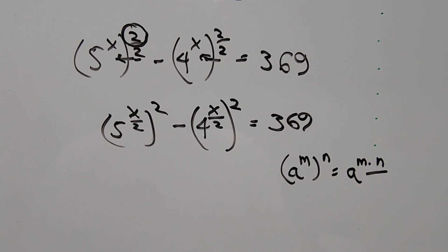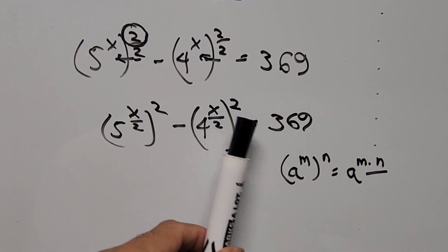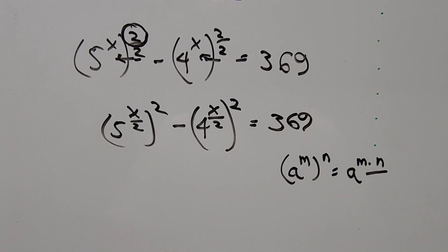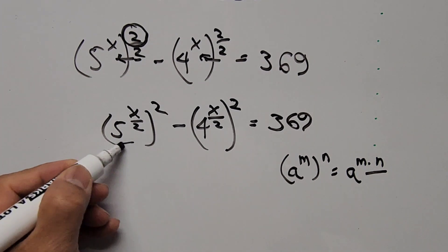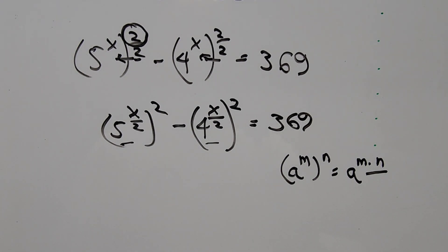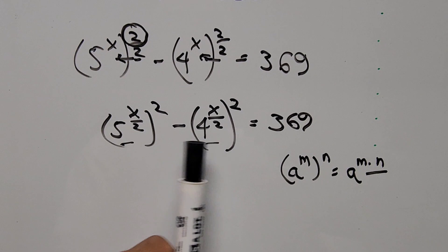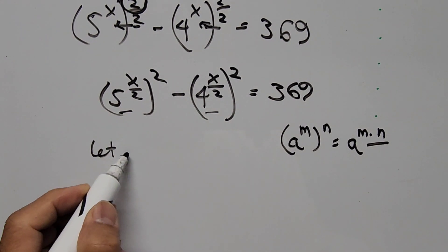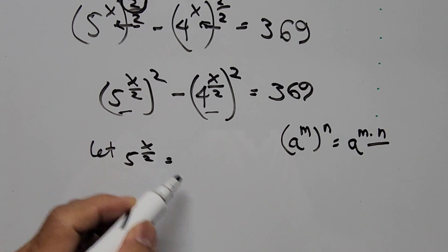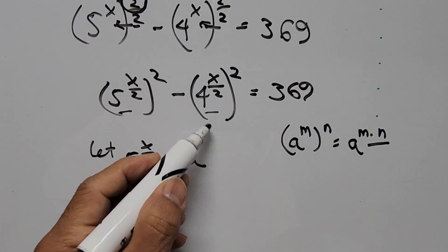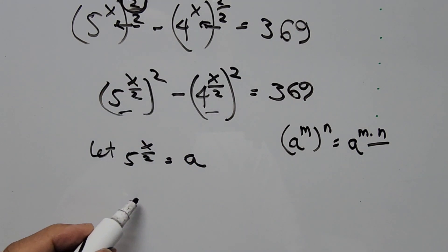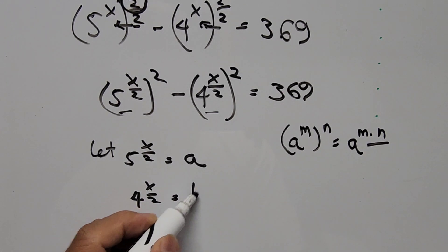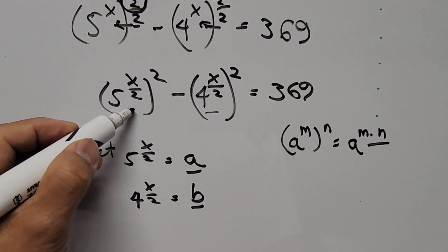The equation is now transformed so we have a squared term minus another squared term, which is a difference of squares — one of the special factors in algebra: a squared minus b squared. So let's introduce variables: let a equal 5 to the power of x over 2, and let b equal 4 to the power of x over 2.